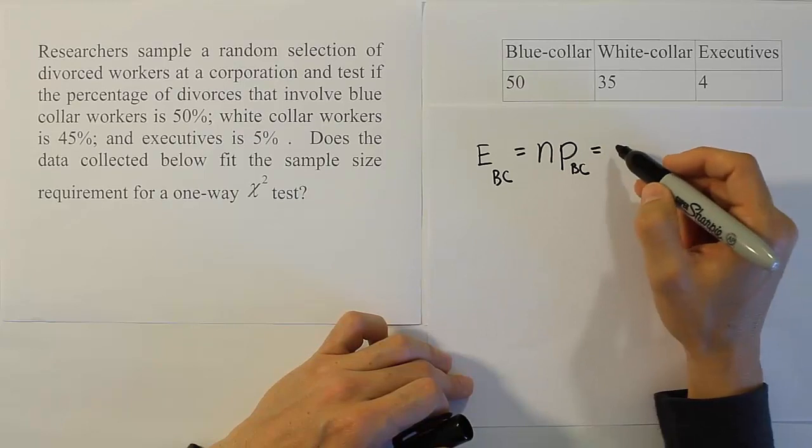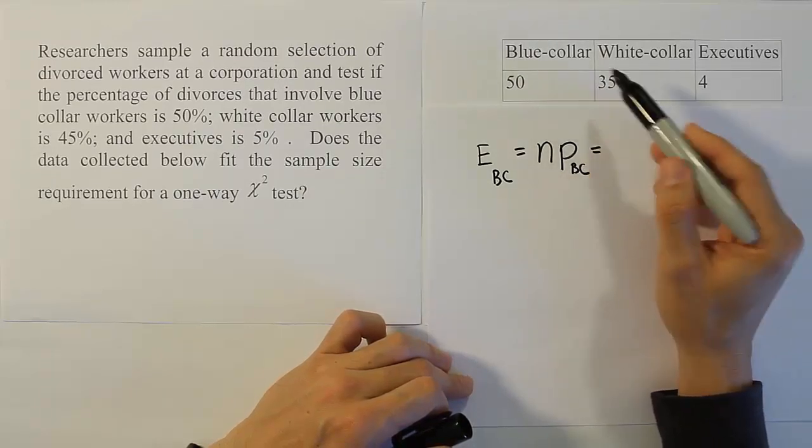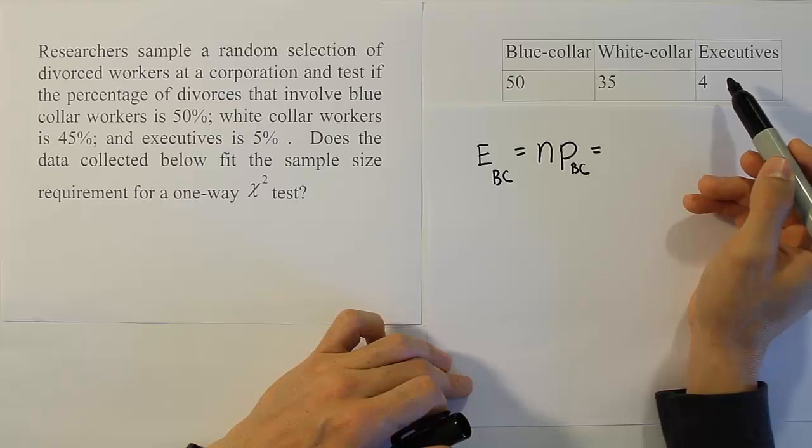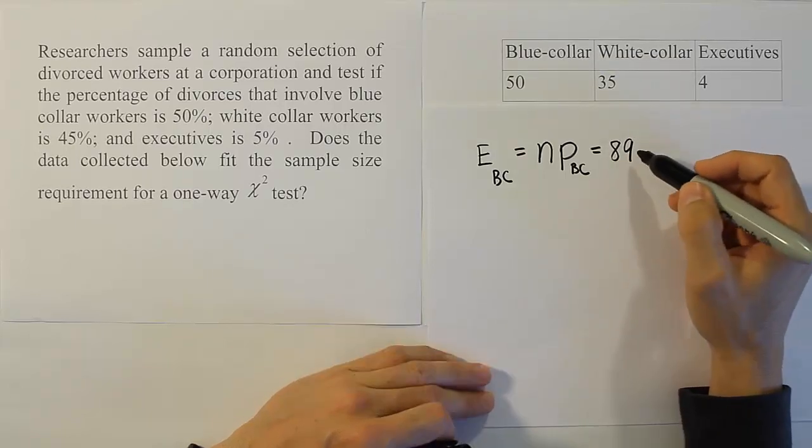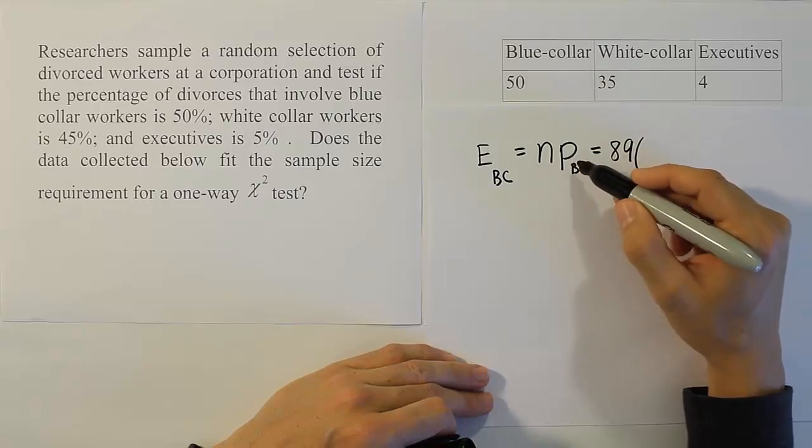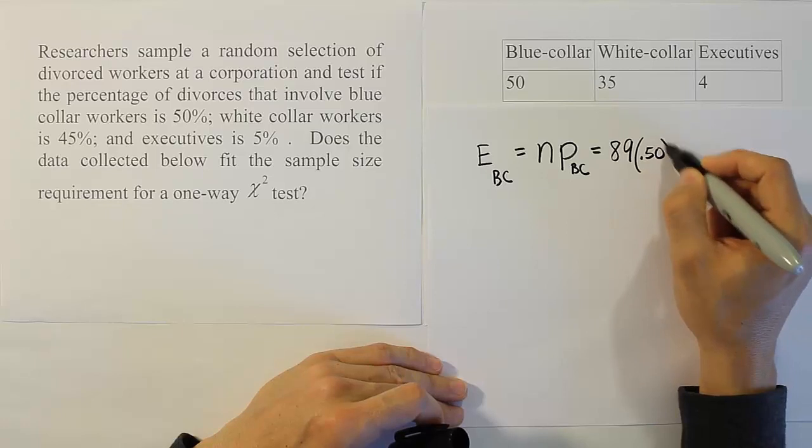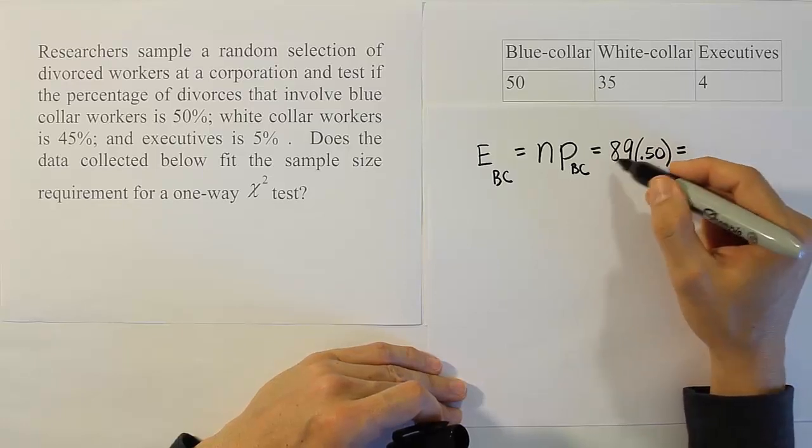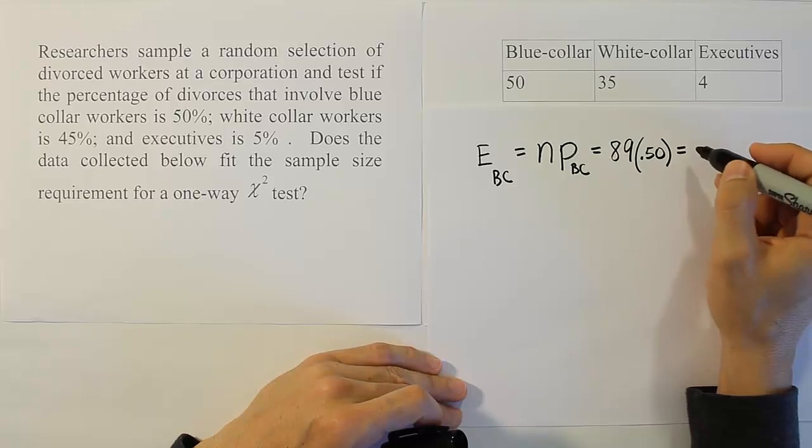The n is just the total number of values in our study. We have 50, 85, 89, so 89 people are involved in the study. And the probability that somebody's in the blue-collar category is 50%, so 0.50. If we work that out, we're basically saying half of 89, which is 44.50.